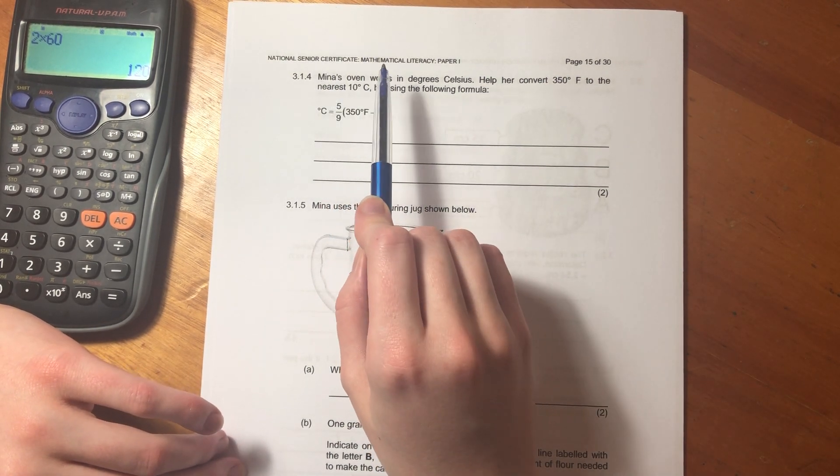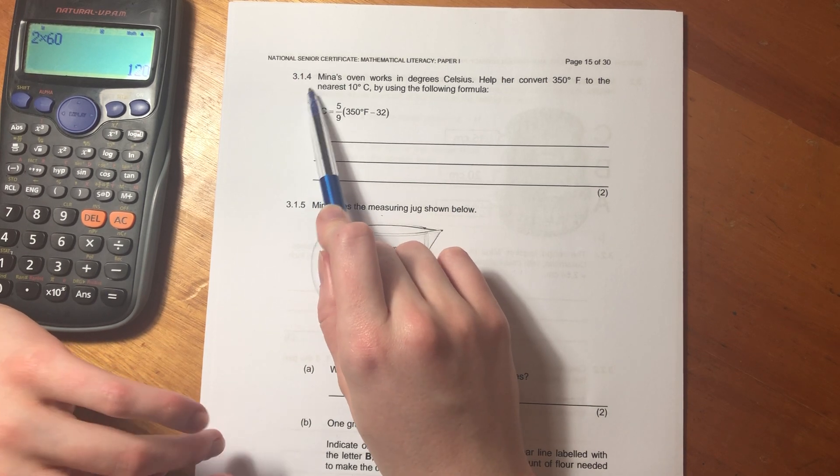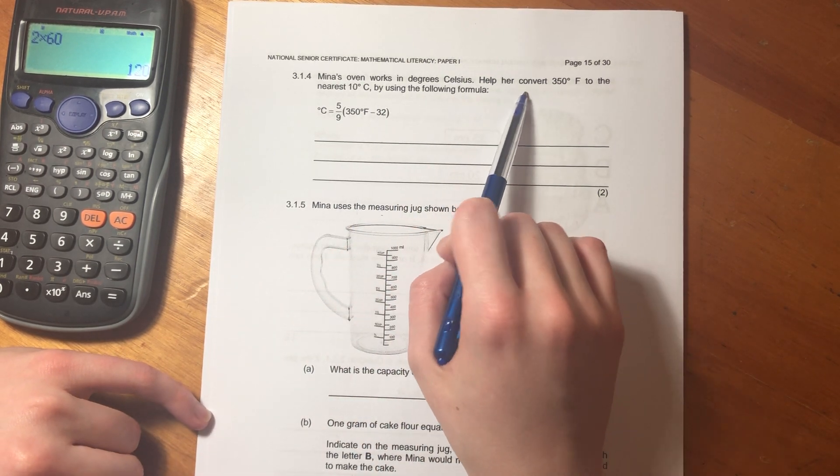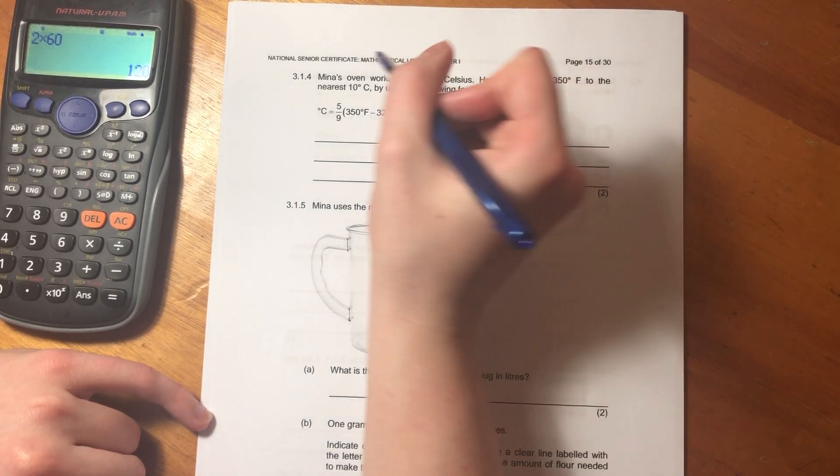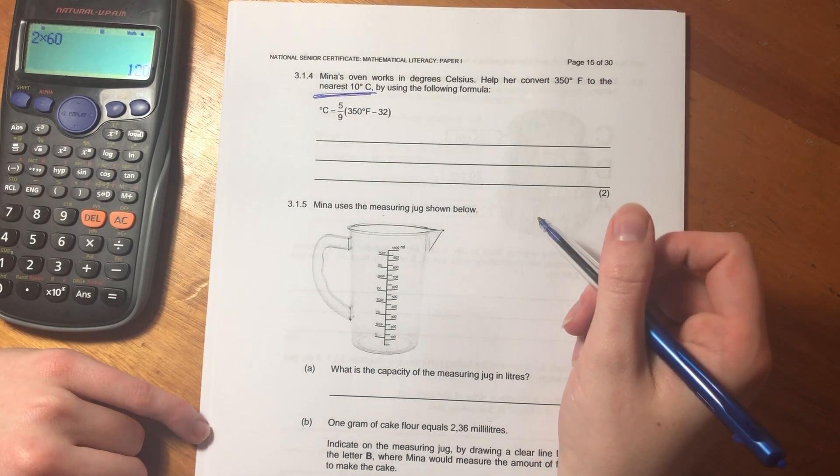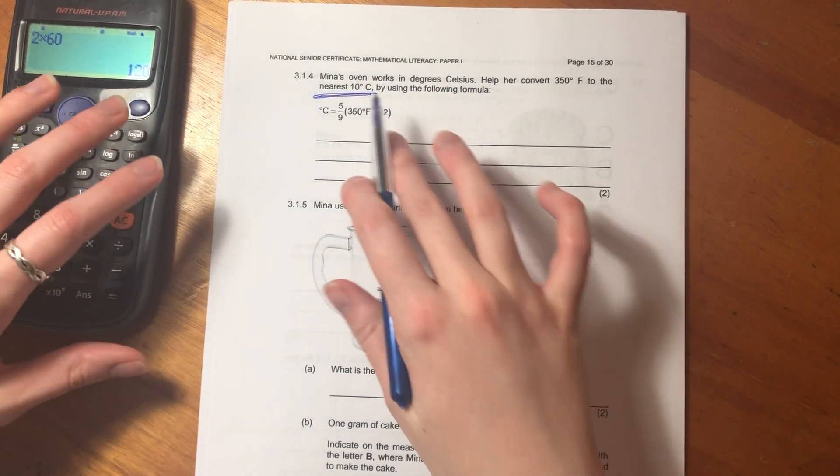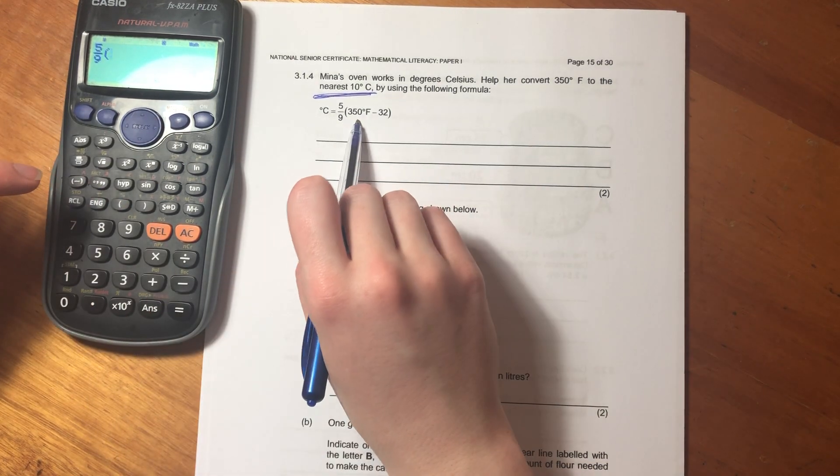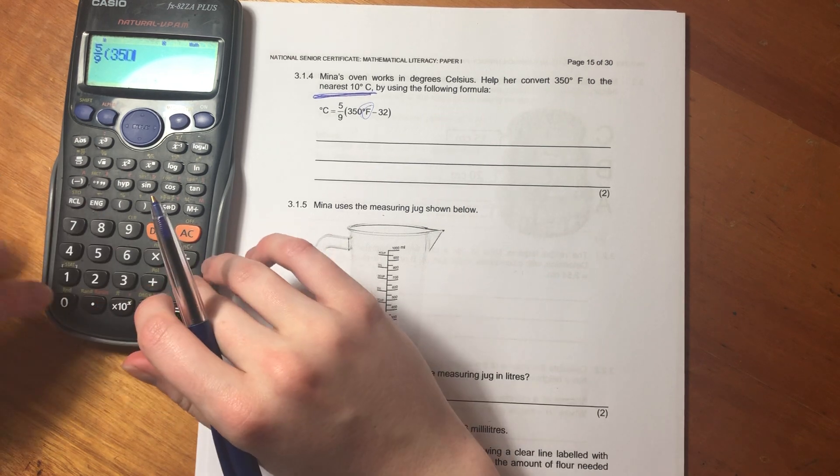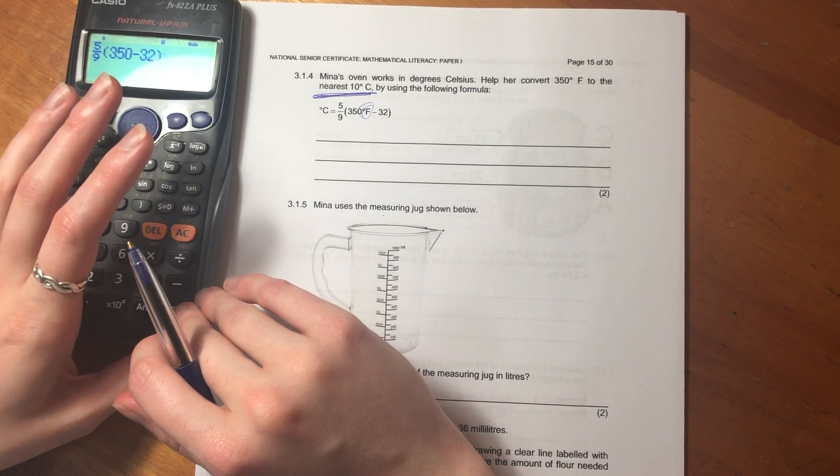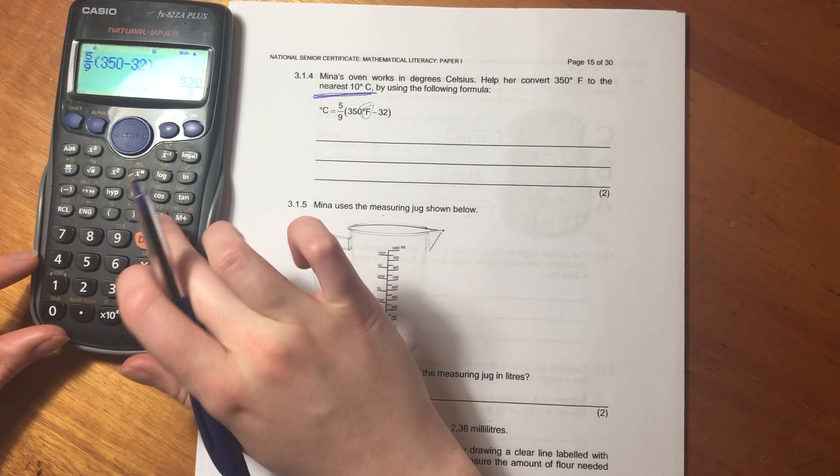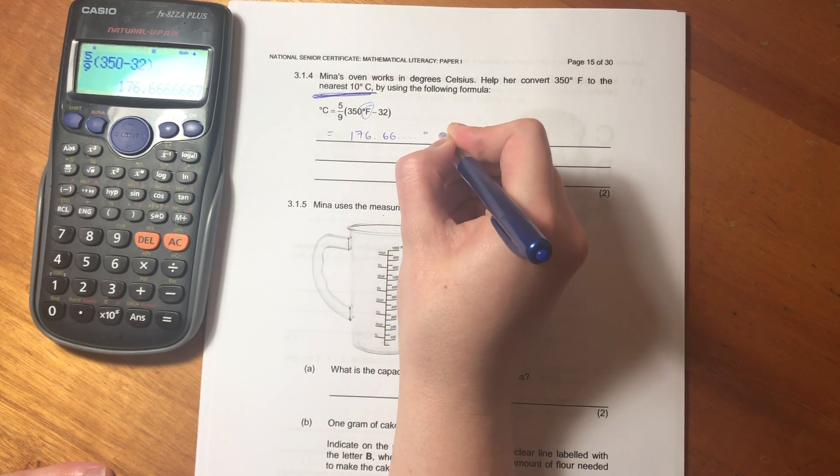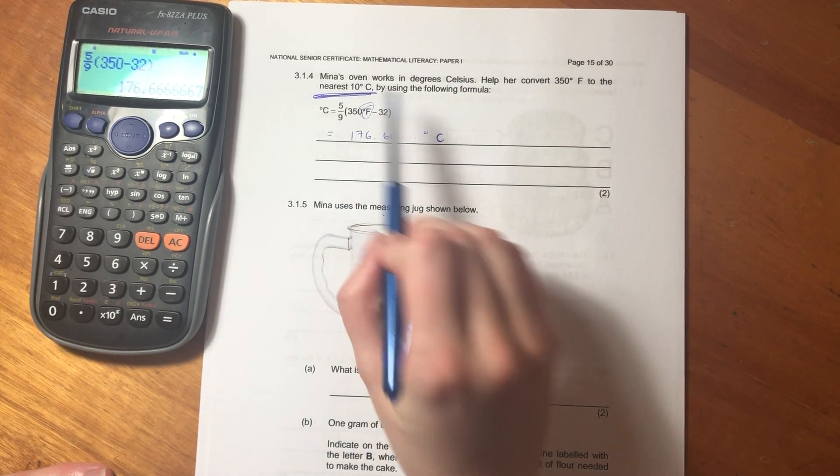Let's now look at 3.1.4, which says Mina's oven works in degrees Celsius. It's in a different type of measurement to Fahrenheit. How about we convert this Fahrenheit, 350, to the nearest 10? This is important guys, the nearest 10 degrees Celsius, by using the following formula. What's really nice is they've actually given us the whole shindig over there, which is absolutely fabulous. So we just plug it into our calculator. Remember, when you plug it into your calculator, don't put units guys, don't put units. It's impossible to do that. Don't get hung up on that. When we plug that in, it gives us 176.6666 degrees Celsius.